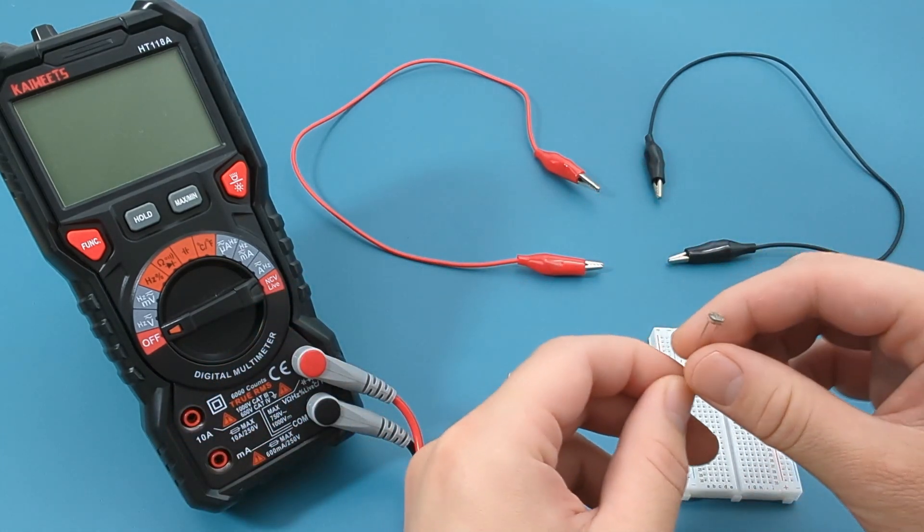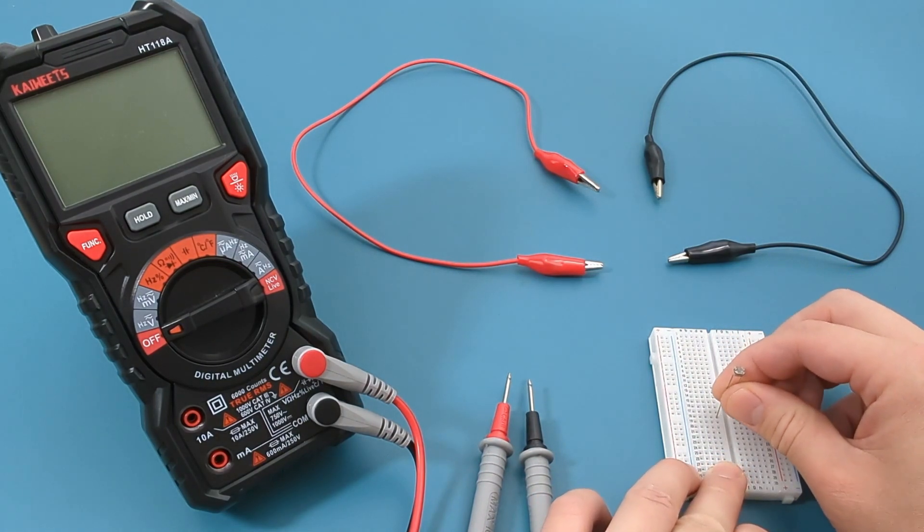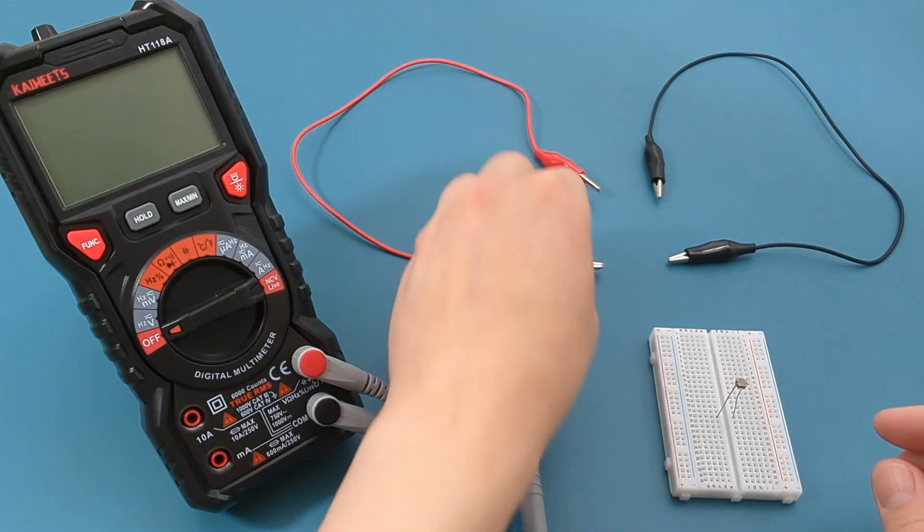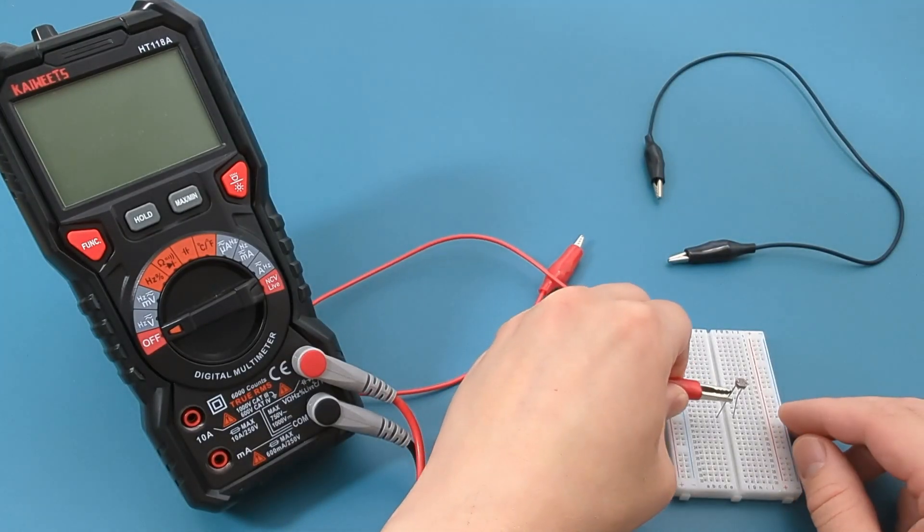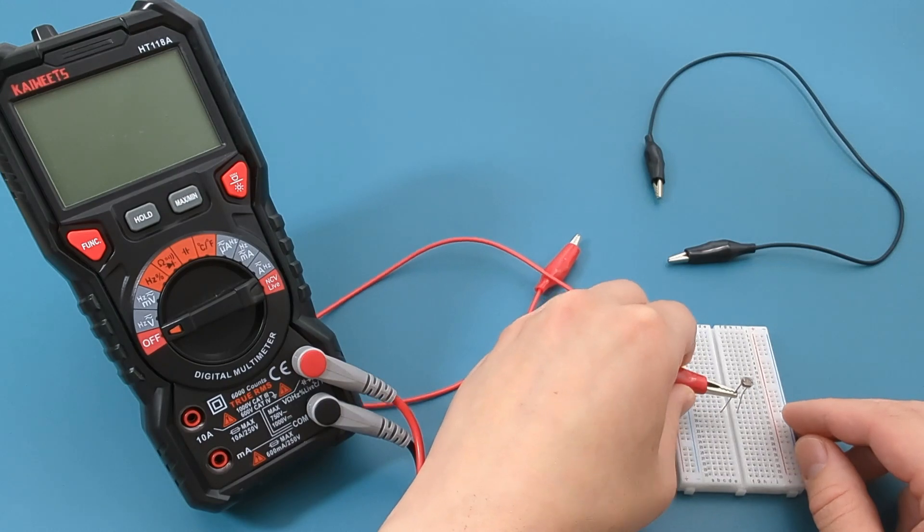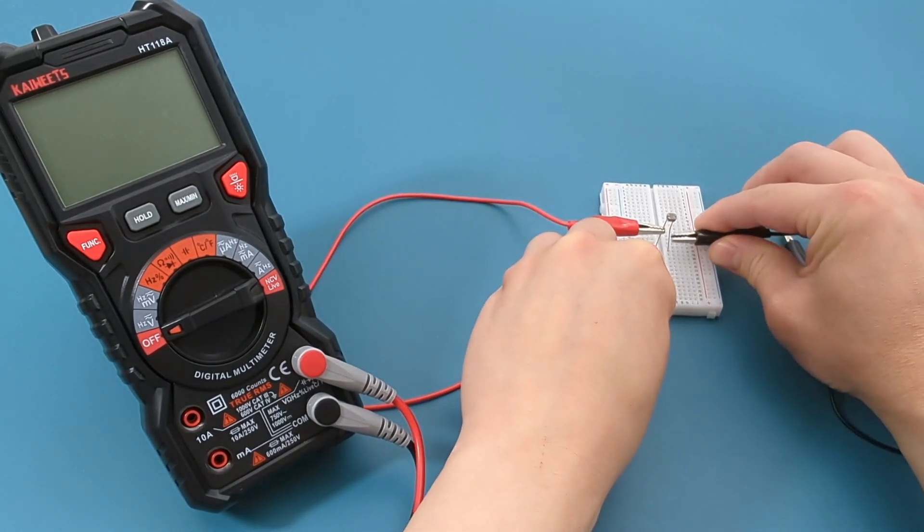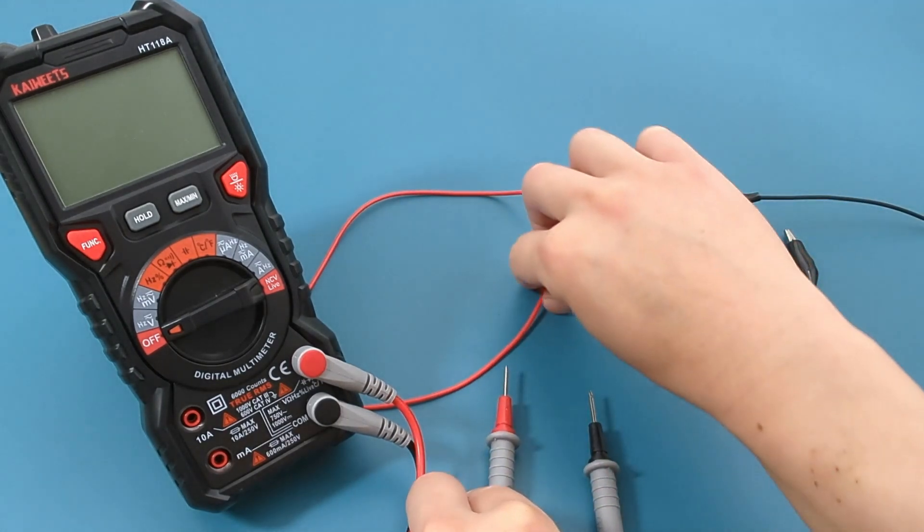Insert the LDR into the breadboard. Connect the red alligator clip to one of the leads of the LDR. Connect the black alligator clip to the other lead of the LDR. It doesn't matter which probe goes to which lead as resistance is not polarity sensitive.